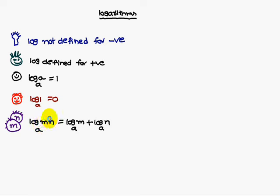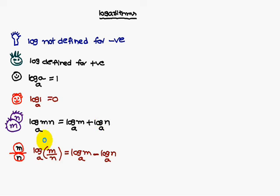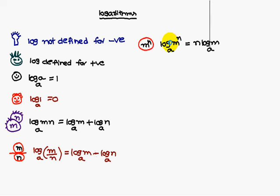For the product of two numbers M and N, log MN base a can be written as log M base a plus log N base a. For division, log M/N base a equals log M base a minus log N base a. And log M to the power N base a can be written as N times log M base a.